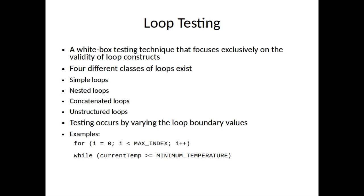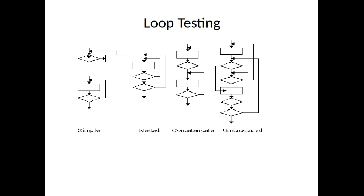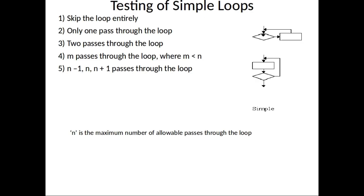Testing occurs by varying the loop boundary values — for example, in a for loop from i equals zero to i less than max index, or a while loop where current temperature is greater than or equal to minimum temperature. A flow chart is shown to remind us of the different types: simple loop, nested loop, concatenated loop, and unstructured loop.